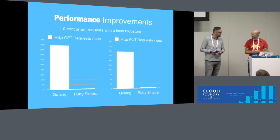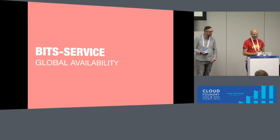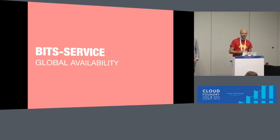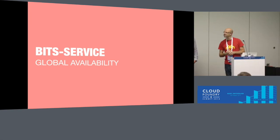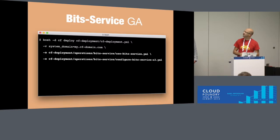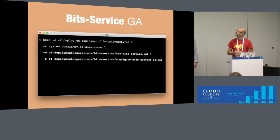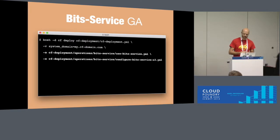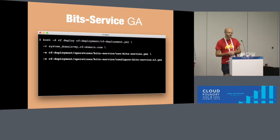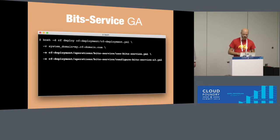When is this available? The Bit Service went GA last week, so now it's available in CF deployment as an ops file. What you do is just your usual BOSH deploy, specify CF deployment YAML, then add two additional ops files: one is 'use-bit-service' and the second is 'configure-bit-service' with your desired backend. We support all the backends that the Cloud Controller currently supports — S3, GCP, WebDAV, local, OpenStack, and so on.